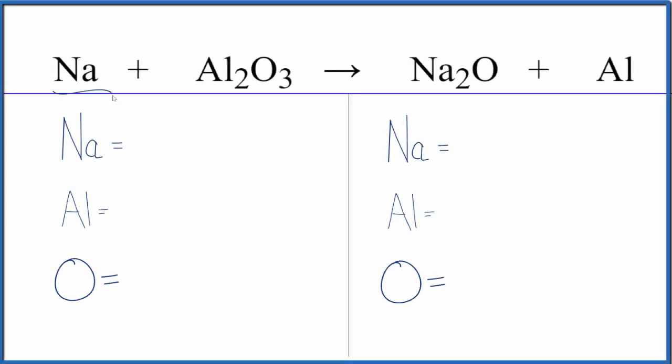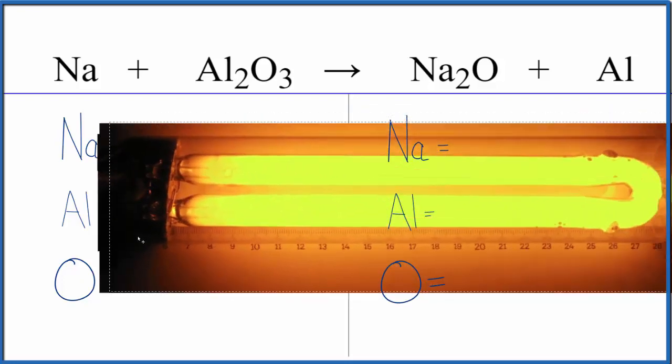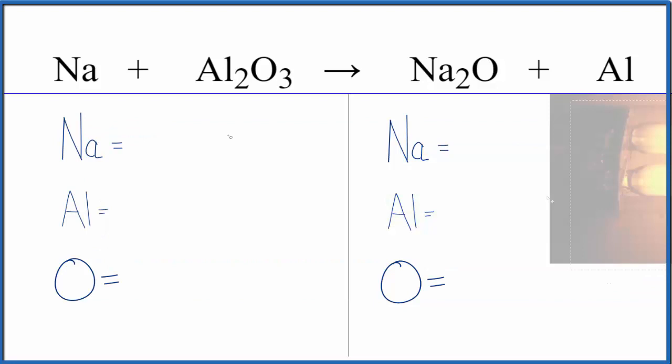Let's balance the equation for Na plus Al₂O₃. This is sodium metal plus aluminum oxide. This is a phenomenon that happens with streetlights that kind of limits the lifetime of those yellow street lamps. You'll see this nice yellow color here. Let's balance the equation.